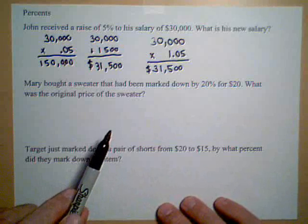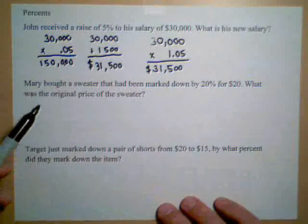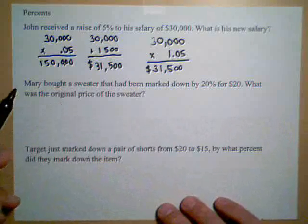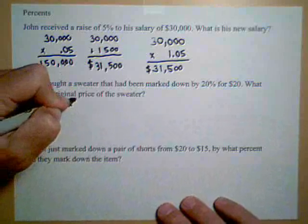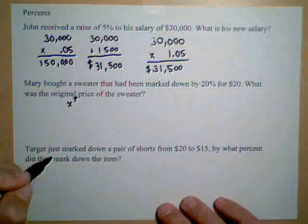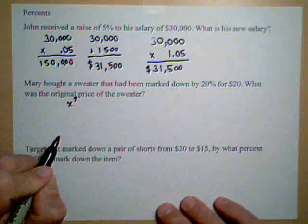Now, we know that the original cost of her sweater is what we're looking for, so let's call that X. So X is going to be the original price. Now, let's think about how we would do this problem if we knew the original price.